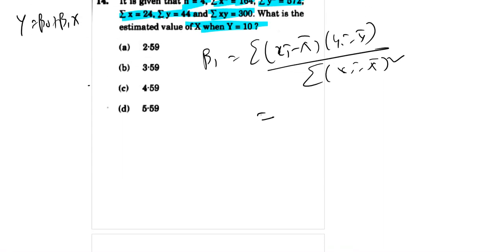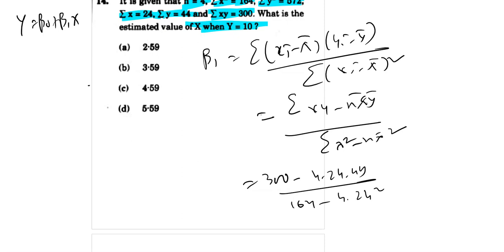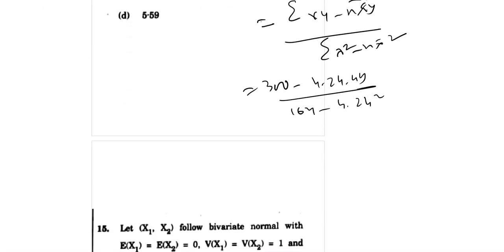So summation of x, y, n, y, y bar square in x bar square. So 300, 424, 44, 164, 24 square.